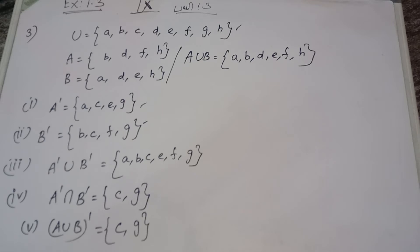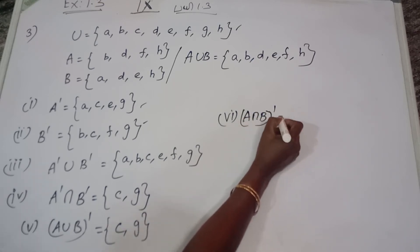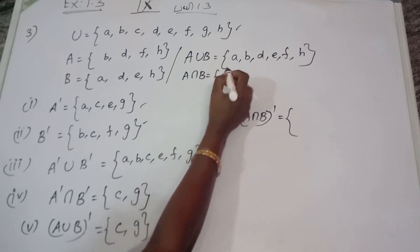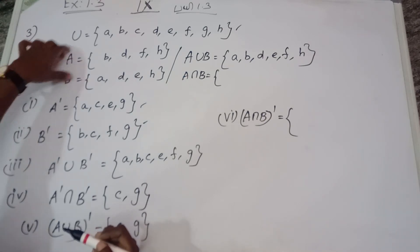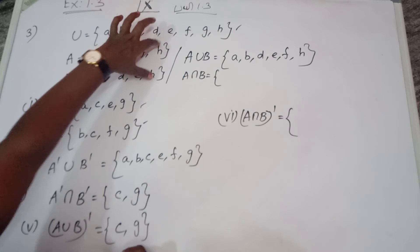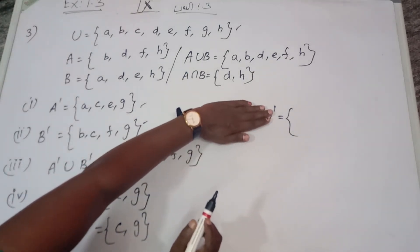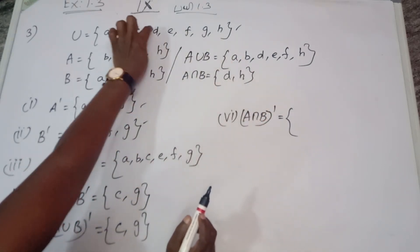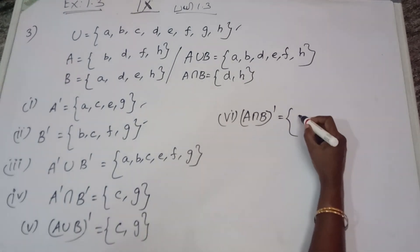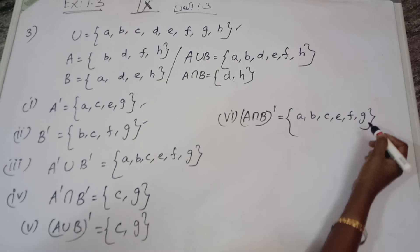The sixth sub-question: A intersection B the whole dash — (A ∩ B)'. The element which is not in A intersection B but in the universal set. A intersection B is found first, then we take its complement. The answer gives elements like F, G for (A ∩ B)'.